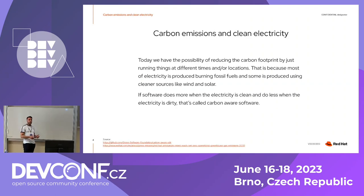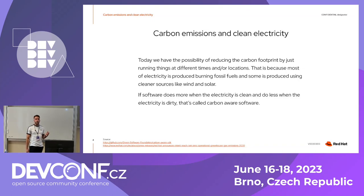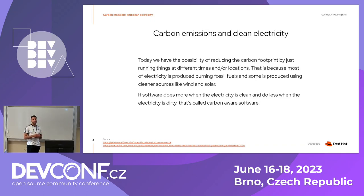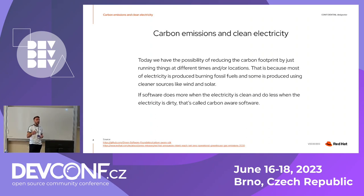Carbon emissions are one of our current and biggest problems. A lot of companies are trying to reduce them — as is the case with Red Hat, which intends to reach net zero emissions by 2030. Nowadays it is possible to reduce this carbon footprint by selecting a different time or location for running things, because most electricity is produced by burning fossil fuels, but there is a percentage — getting bigger and bigger — produced by renewable and cleaner sources such as solar and wind.